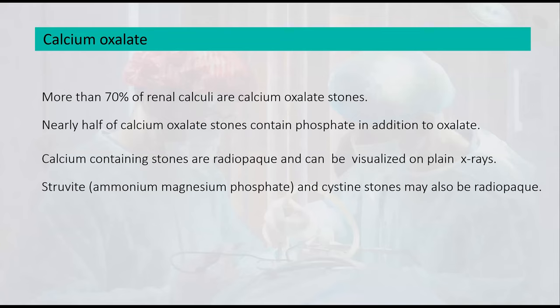Don't forget there is a triple phosphate stone called struvite stone, which is ammonium magnesium phosphate. This is an infection stone because it forms on top of a nidus — a nucleus from infection by urease-producing organisms — allowing concentric layers of ammonium magnesium phosphate to form in the shape of a staghorn stone.